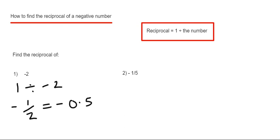So let's have a look at example 2 then. This time we've got the reciprocal of minus 1 fifth. So again we just need to do 1 divided by minus 1 fifth.